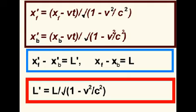Since the expression under the square root is always between 0 and 1, the observed length will always be less than that measured by the passengers. This is called relativistic length contraction.